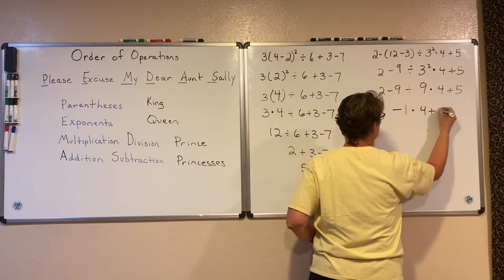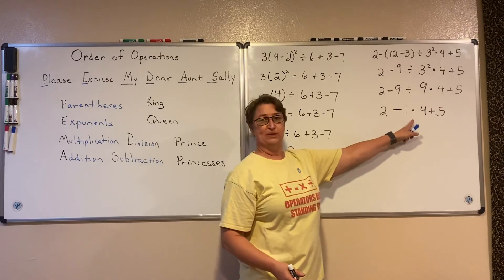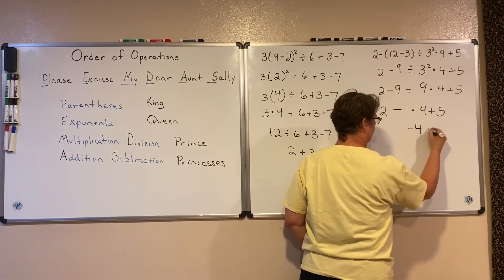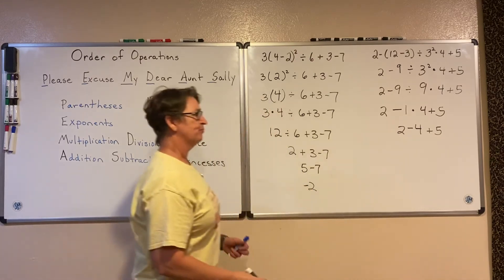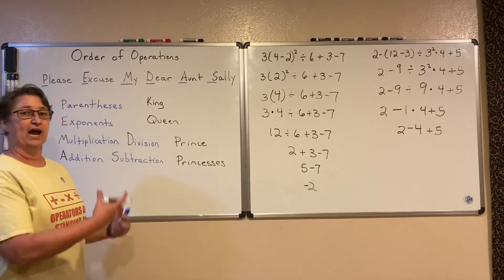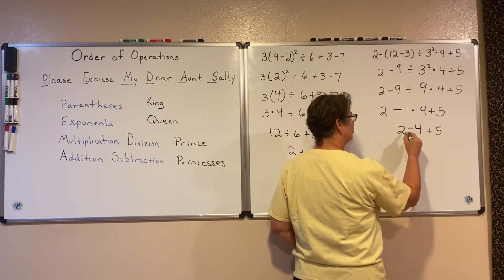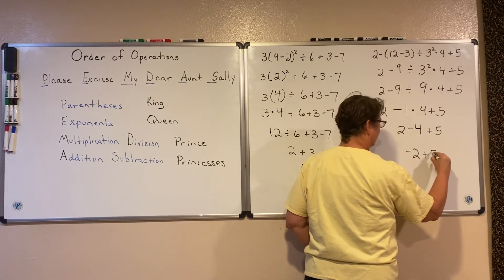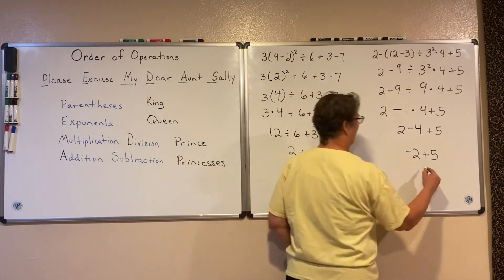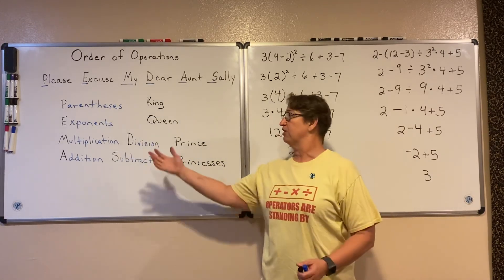Everything else stays exactly the same. I still have a multiplication, so I do that next: negative 1 times 4 gives me negative 4, and I leave everything else the same. I've taken care of multiplication and division. Last, I take care of addition and subtraction from left to right. 2 minus 4 is negative 2, and then negative 2 plus 5 gives me 3. We will all end up with 3 if we always use this order of operations.